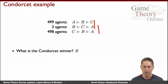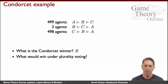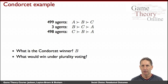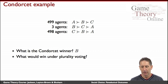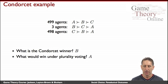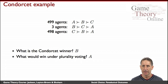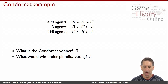So where's the problem? Think about the simplest sort of voting we're familiar with — plurality voting, where everybody votes for their top candidate. Who would win under plurality voting here? Clearly A would win, because 499 agents would vote for A and the next highest would be C with 498. So plurality voting doesn't give you the candidate that, on the face of it, should be the clear winner.